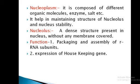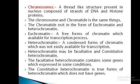Chromosomes are thread-like structures present in the nucleus, composed of strands of DNA — polynucleotides — and histone proteins. Chromosomes and chromatin are the same things. Chromatin exists in two forms: euchromatin, a free form of chromatin available for the transcription process, and heterochromatin, a condensed form not easily available for transcription.